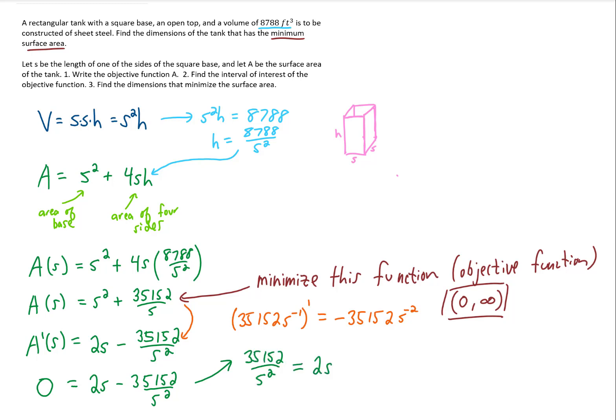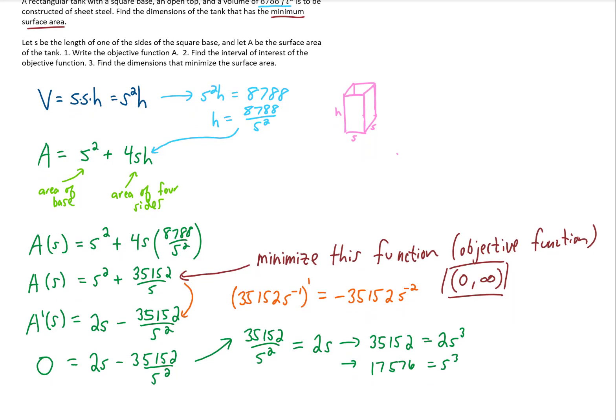Then I'm going to multiply both sides of the equation by S squared. That gives us an S cubed on the right side. I'm going to divide both sides of the equation by 2. And finally, I'm going to take a cube root of both sides of this equation. Miraculously enough, that gives us a nice even number. S equals 26.